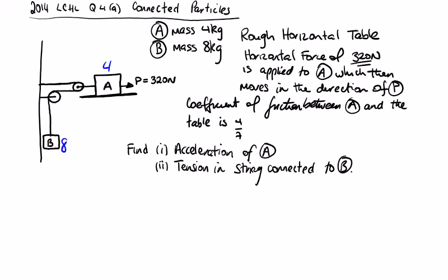We're told that the rough horizontal table has friction with coefficient 4 over 7. There's a horizontal force P applied to A, and it moves in the direction of P, which is what this arrow was showing you on the diagram.